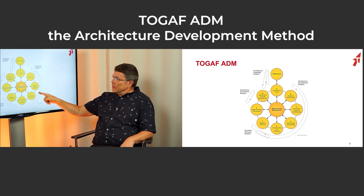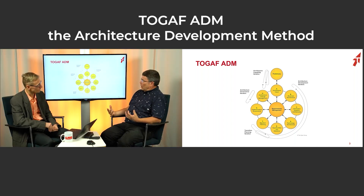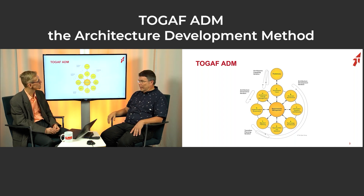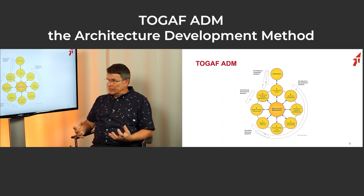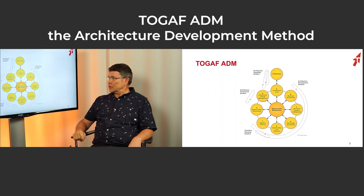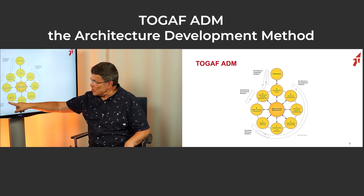These are the phases where you actually do the architecture. As input you have a common understanding of what you're supposed to do, and the output is the architecture — you do plans, you do designs, and you put them all into the repository. After these three phases you already have some kind of architecture. Then you have two more phases about migration planning: 'opportunities and solutions' and 'migration planning.' As you can see in the diagram there's something called 'transition planning iteration' — you iterate between those two.